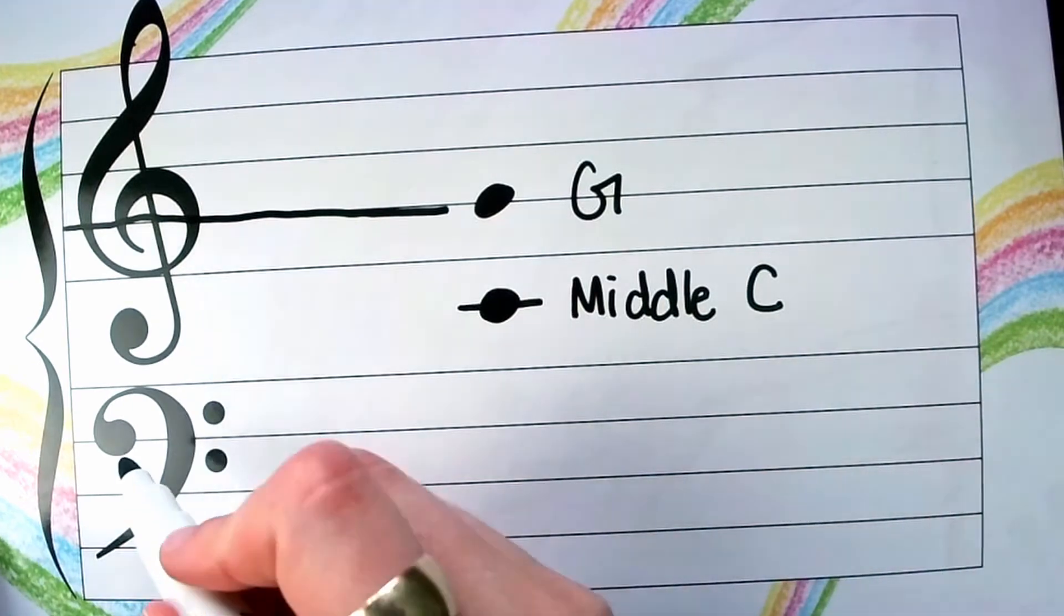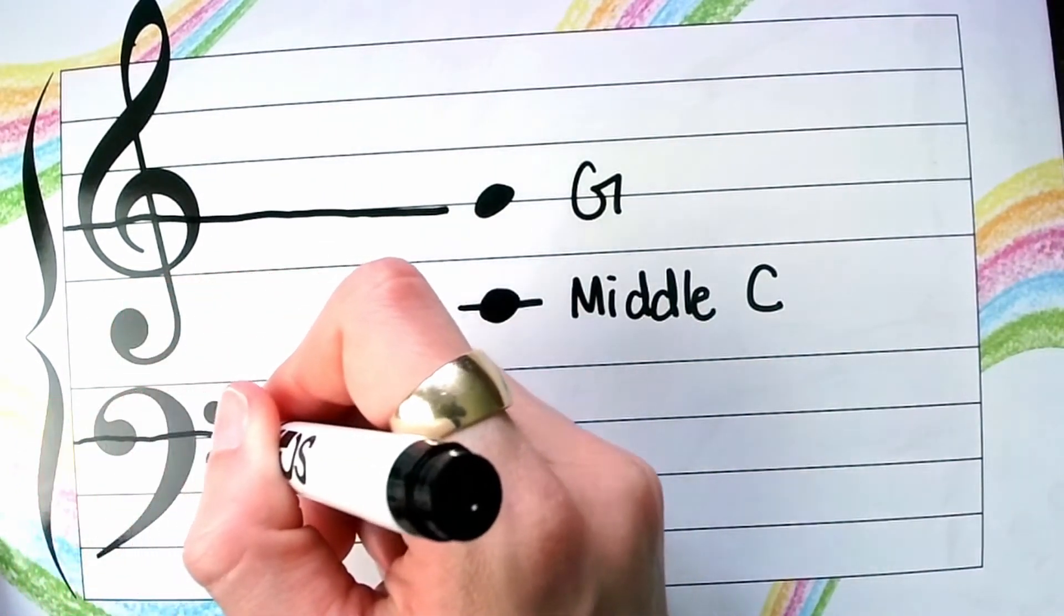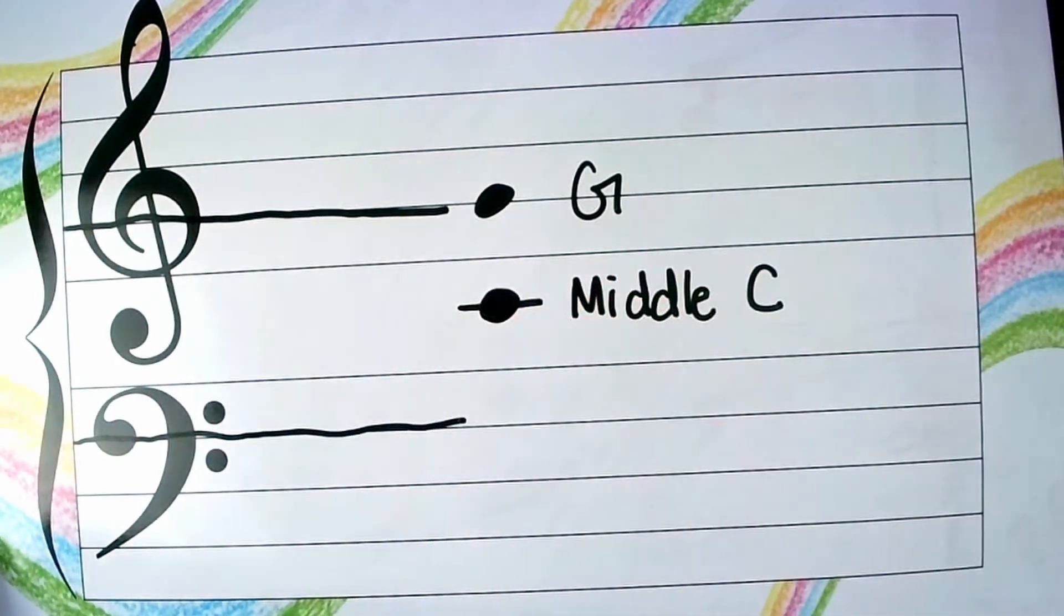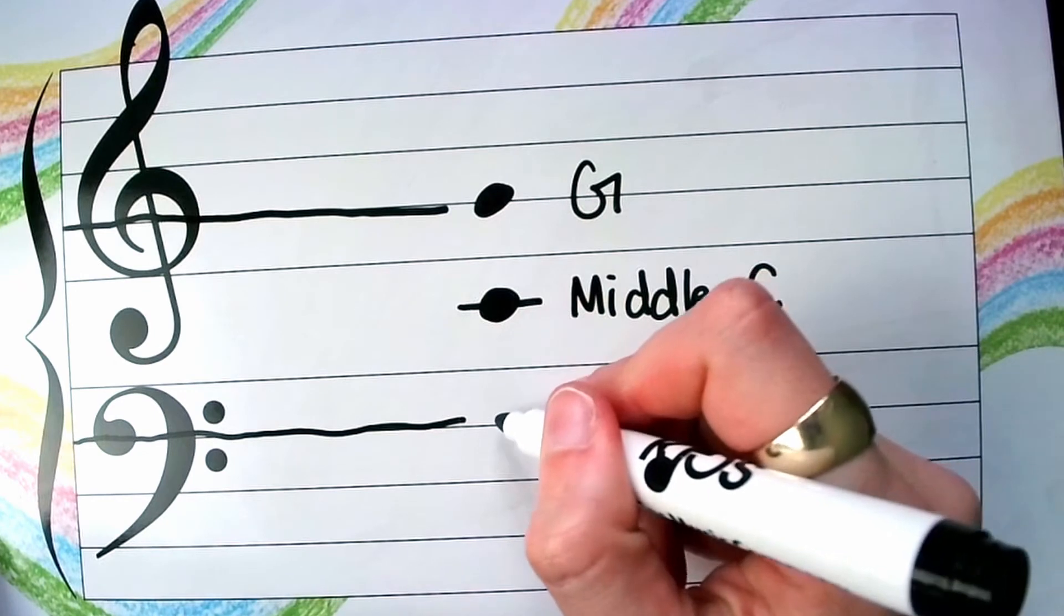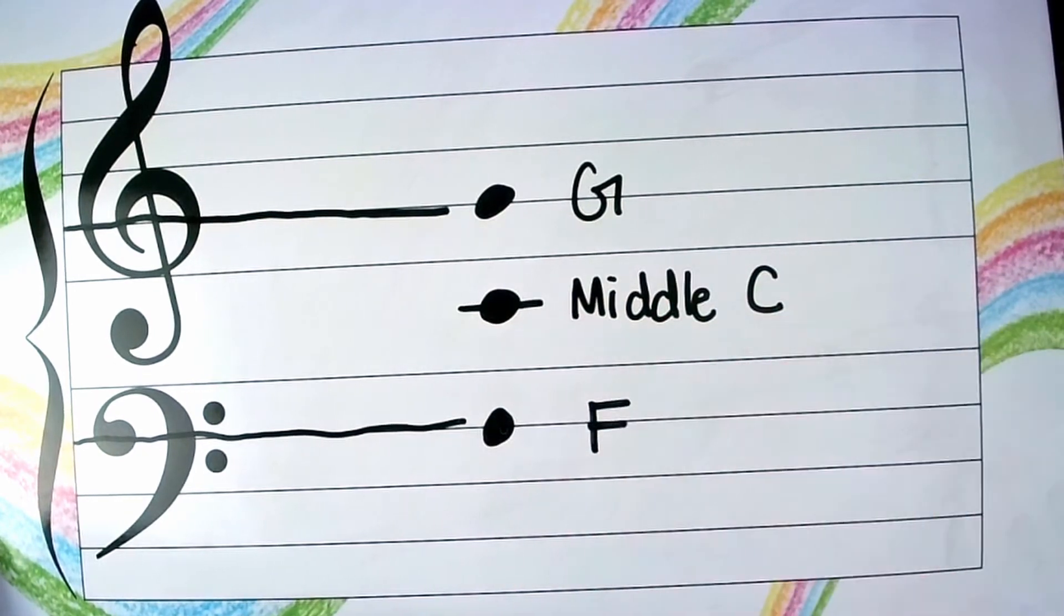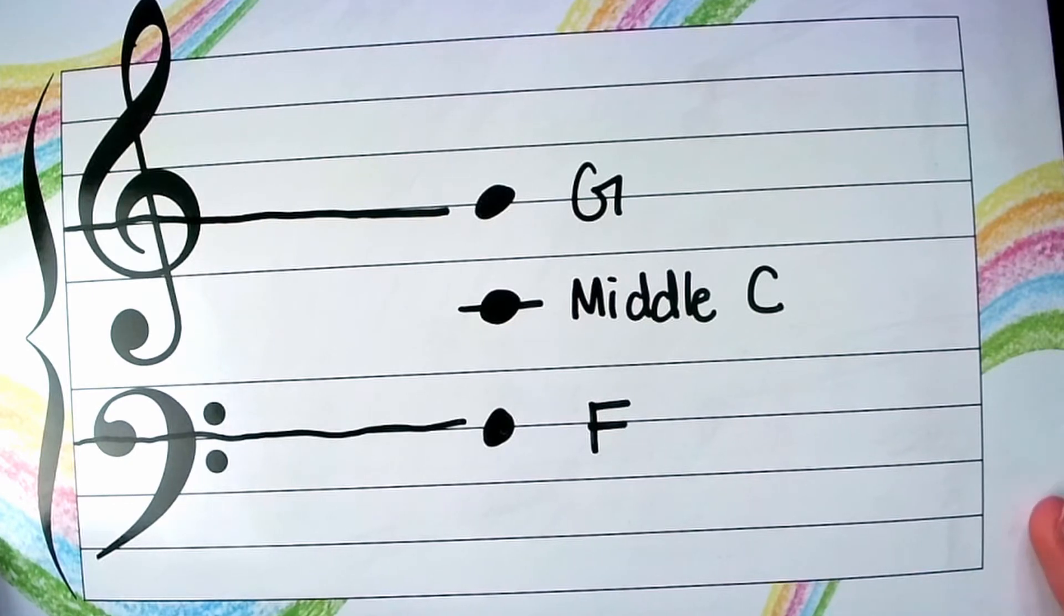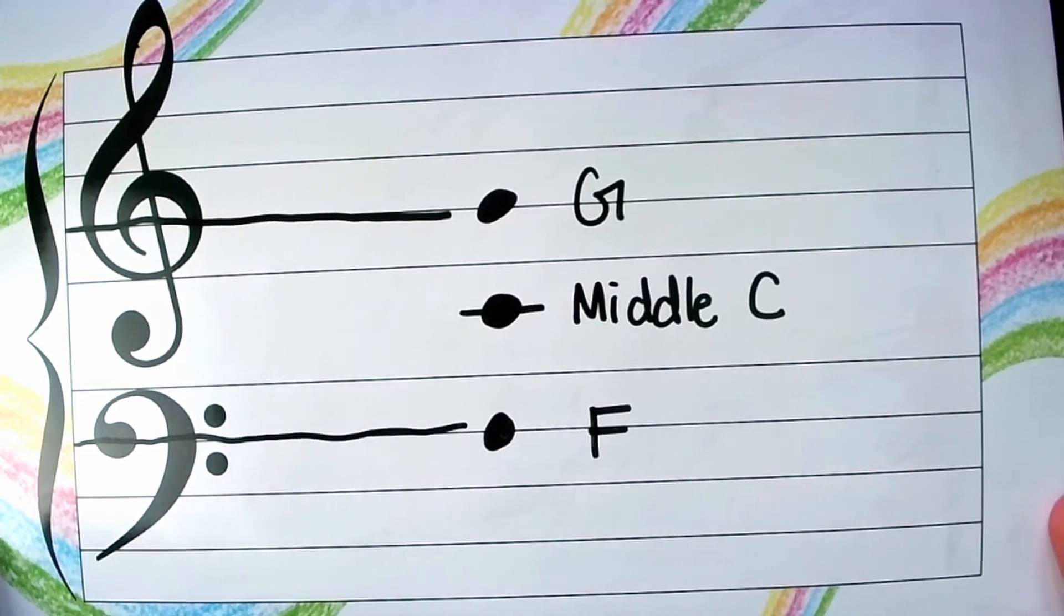Our bass clef also is oriented around a specific line, which is the fourth line. And this note is F. So these are our first three notes that we're going to focus on. And this is kind of like a combination of the landmark system and reading by step and skip.